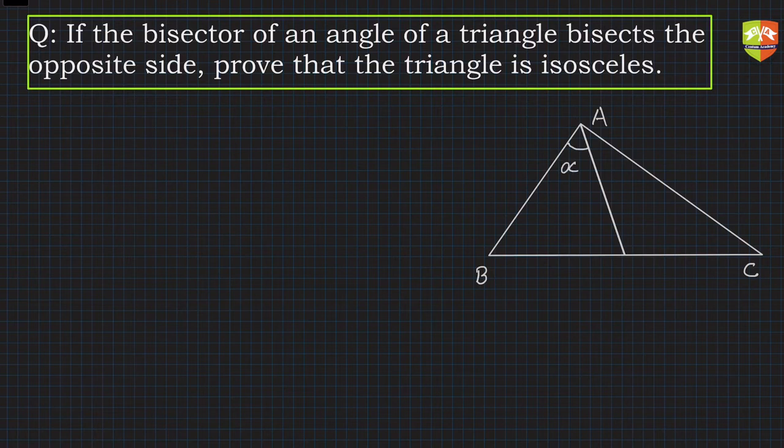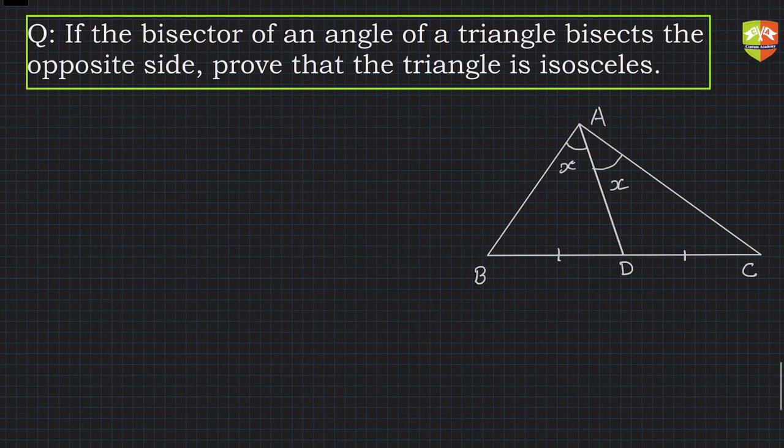Now we have to prove that the triangle is isosceles. The bisector bisects the opposite side. Let's say this is D. So if that is D, then we know that BD is equal to DC. This is given.